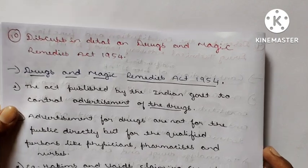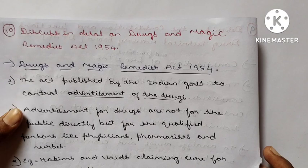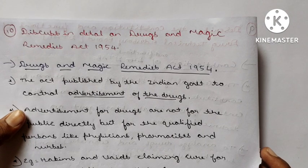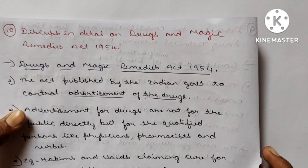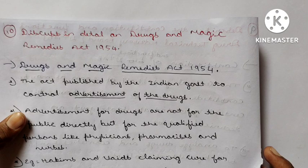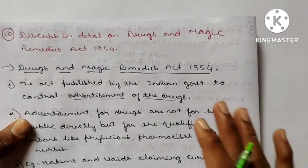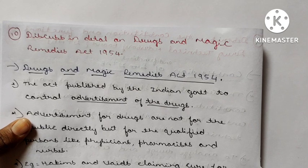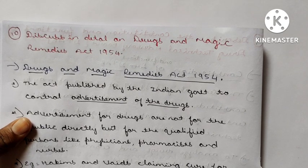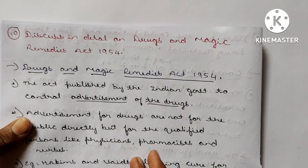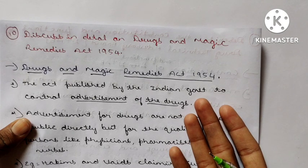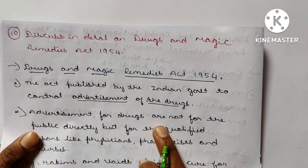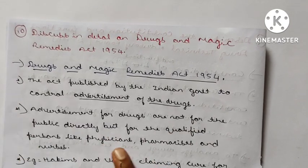Question 10: Discuss in detail the Drugs and Magic Remedies Act 1954. This is a very important act published by the Indian government to control advertisement of drugs. The advertisement of drugs is not good for the general public because people seeing TV ads or newspaper advertisements may take medications without knowing the side effects, which is dangerous. The act restricts drug advertisements to registered medical practitioners and pharmacists only — not for the general public.